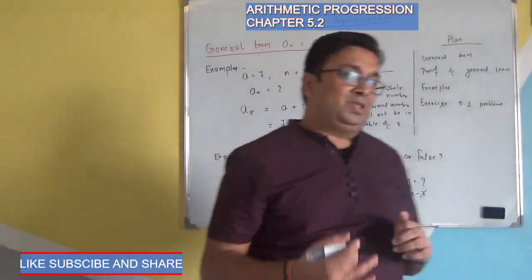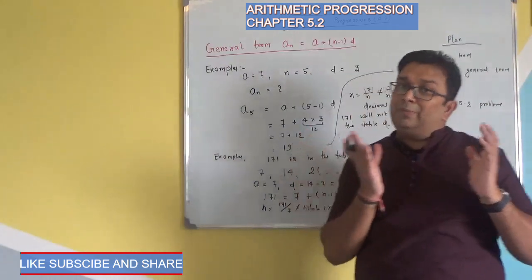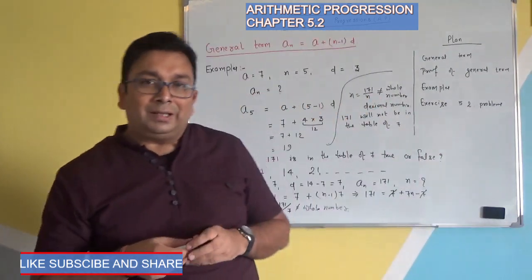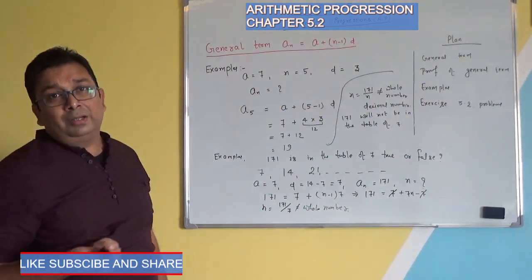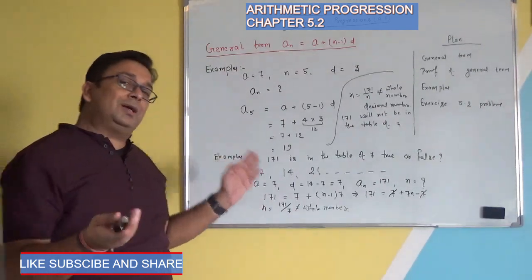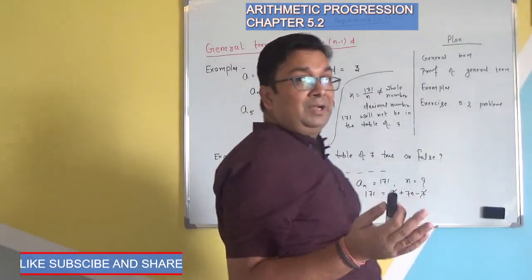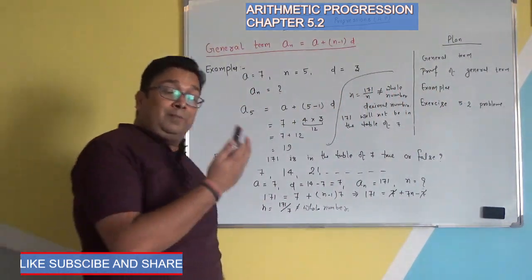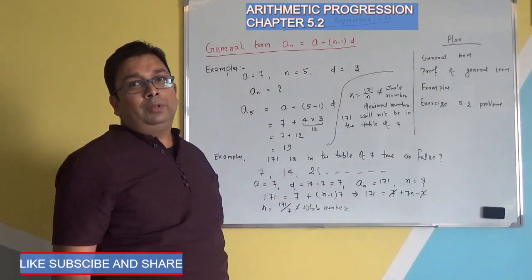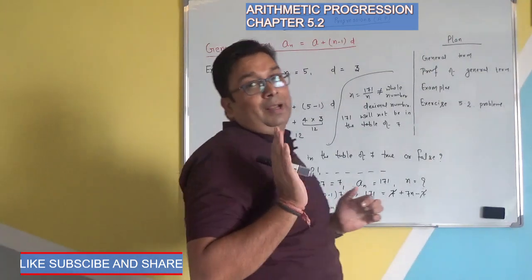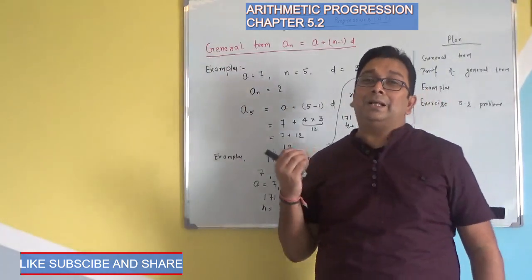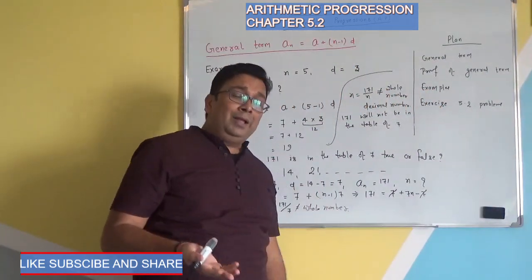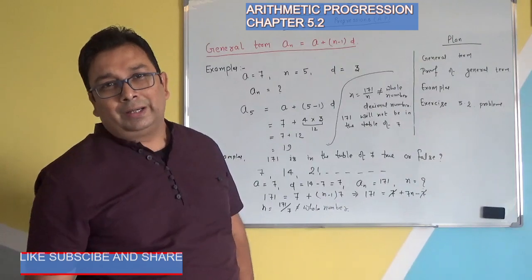In this way, we can check whether any number is present in any table, or whether a number is divisible by something. For example, is 176 divisible by 13, true or false? You can check using the same method. Practice this on your own. If there is any confusion, put it in the comments and I will solve it again in a video. Please like and subscribe and share with as many friends as possible. Any confusion or doubt, write in the comment section and we will clear it in the next video.